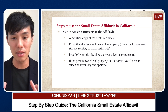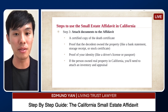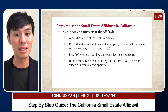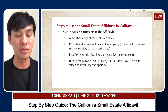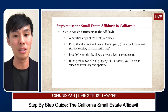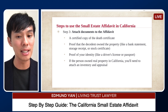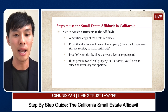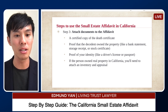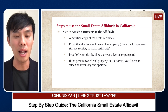Step three: attach all necessary documents to the affidavit. This includes a certified copy of the death certificate, proof that the decedent owned the property such as bank statements, receipts, or stock certificates — especially if you're trying to get stocks valued under the maximum threshold — and proof of your identity like a driver's license or passport. Make sure your ID is not expired. If the person owned real estate in California, you'll also need to attach an inventory and appraisal.